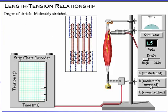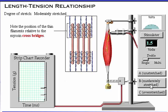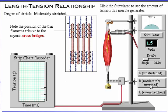At position B, the muscle is in a moderately stretched condition. Note in the diagram the position of the thin filaments relative to the myosin cross-bridges. Click the stimulator to see the amount of tension this muscle generates.